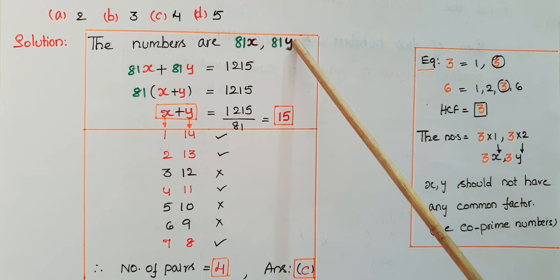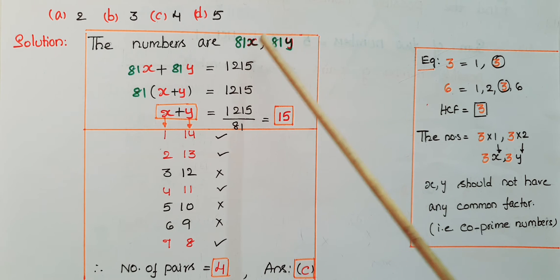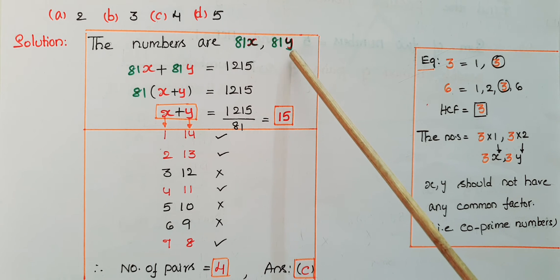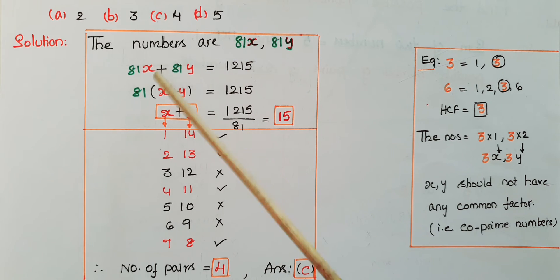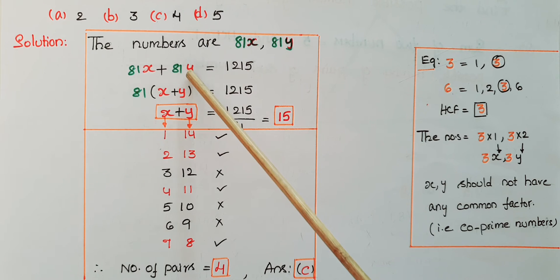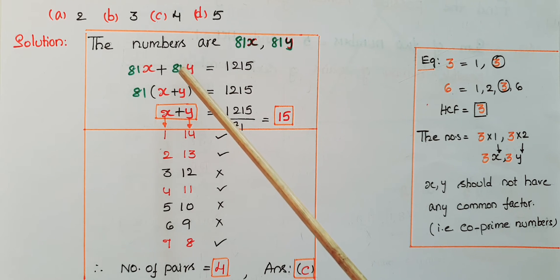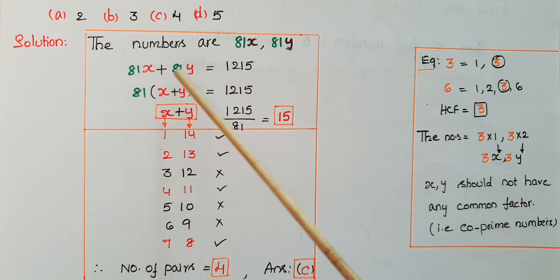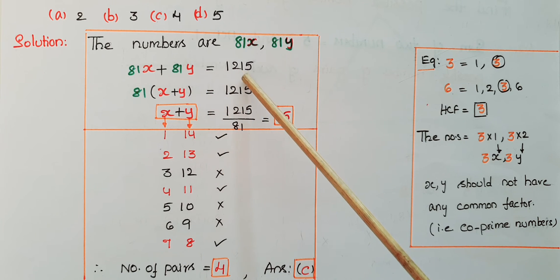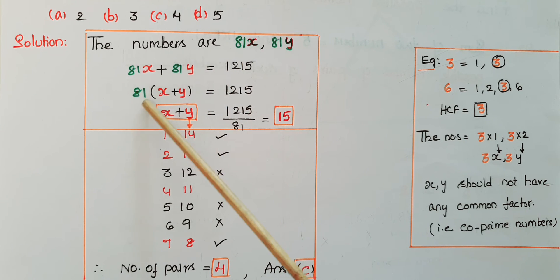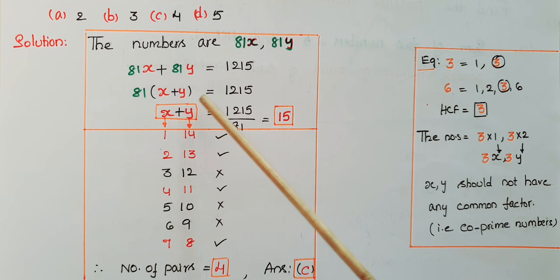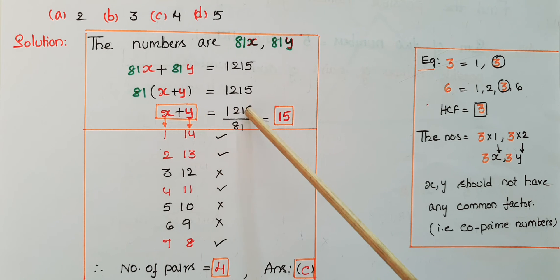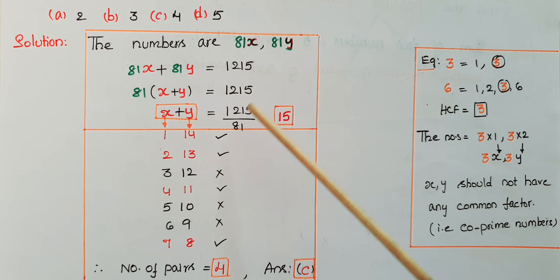Here x and y are co-prime numbers — these two values should not have any common factors. Now we add the two numbers because the sum is given as 1215: 81x + 81y = 1215, so 81(x + y) = 1215, giving x + y = 1215 ÷ 81 = 15.